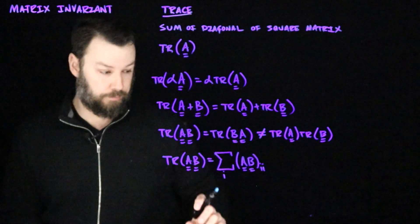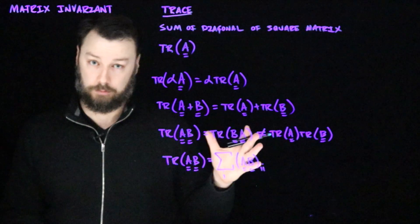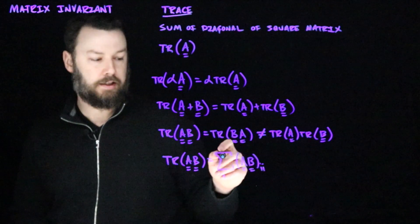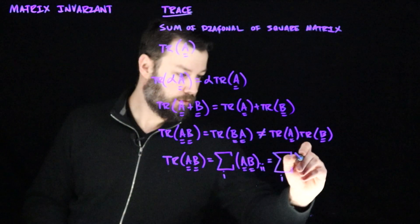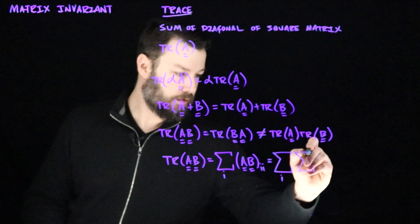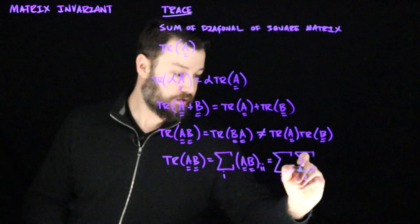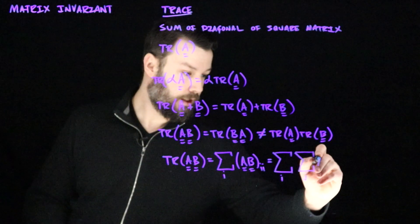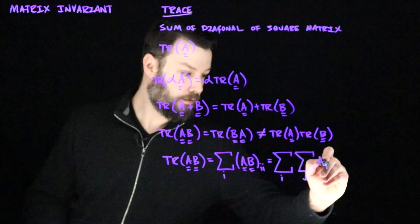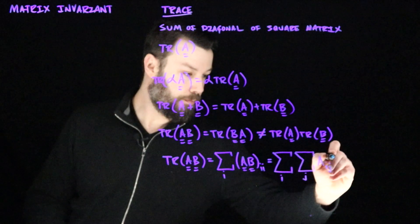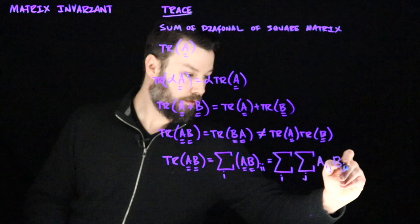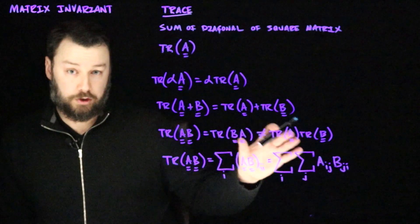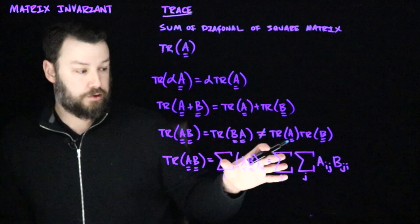So that's just all of the places where the row equals the column. The entry I, I in A times B is itself a sum. So let's write that out as well. And what we would see is that we would have this interdimension J and we would have AIJ multiplied by BJI. So we can see that we could swap these around and it wouldn't change the trace.